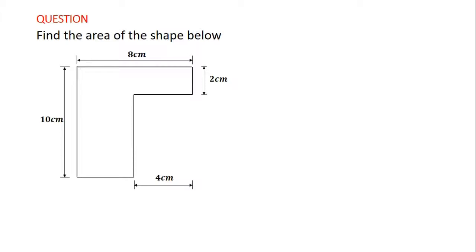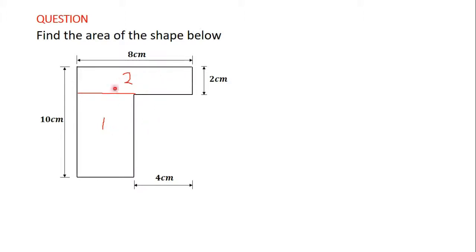You can also extend this line to meet this other line. When you do that, I can call this figure one and this figure two. You can clearly see from the diagram that figure one is a rectangle and figure two is also a rectangle. So if I find the area of figure one and add it to the area of figure two, I'll get the area of the shape. You can use either approach and you'll be able to solve the question.